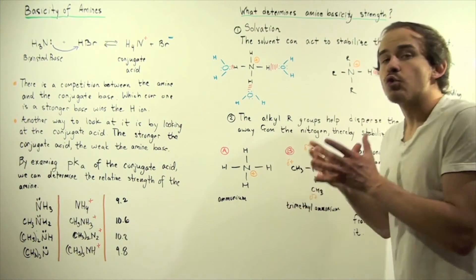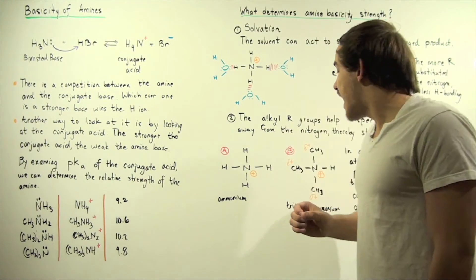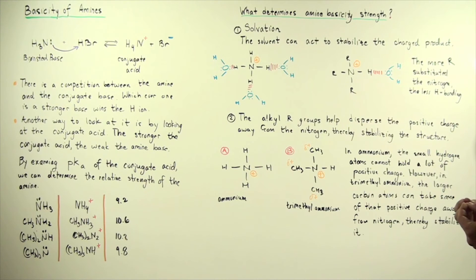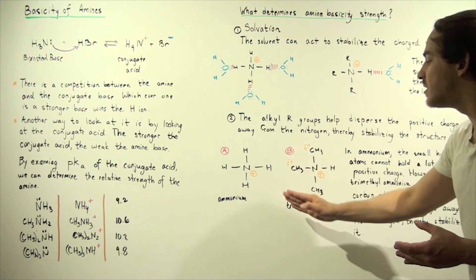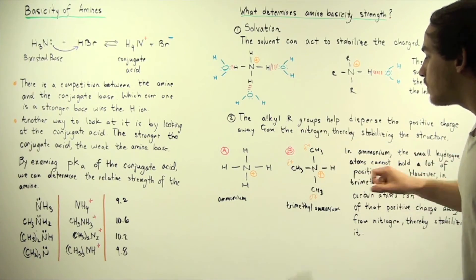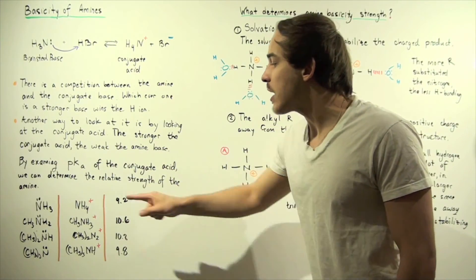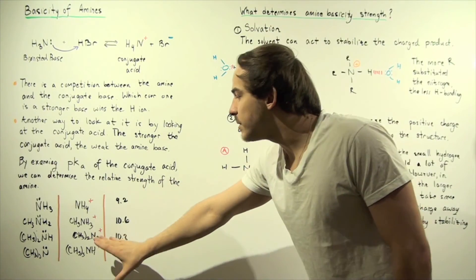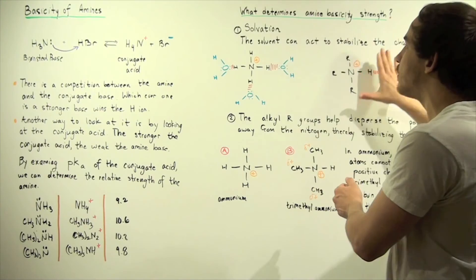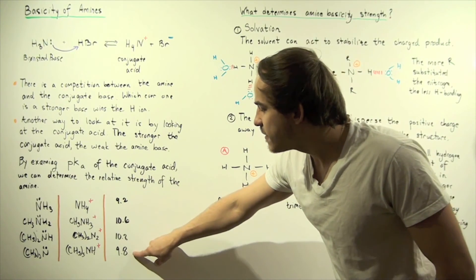Nitrogen is relatively electronegative, meaning it doesn't like to have a positive charge. In trimethylammonium, the relatively large carbon groups disperse that charge, thereby stabilizing it. So as we go down the group, the more carbon atoms we have, the more stabilizing the inductive effect is. But at the same time, the more carbons attached to the nitrogen, the less likely the solvent will stabilize the product. These two competing effects explain the discrepancy in pKa values.